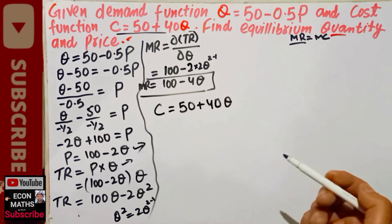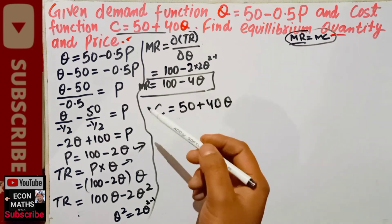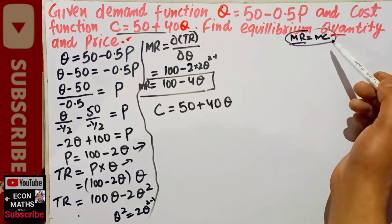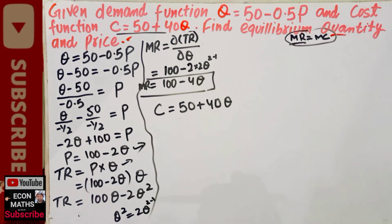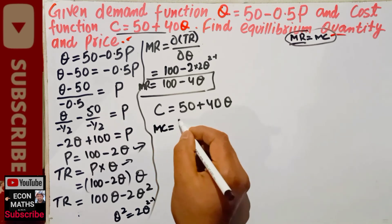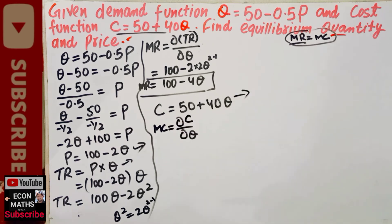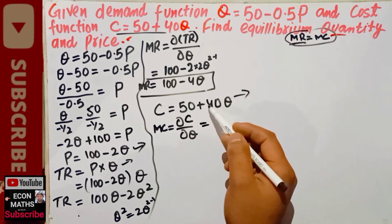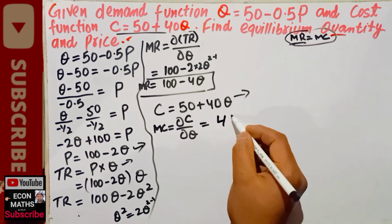We know that equilibrium occurs where marginal revenue equals marginal cost. We have found the marginal revenue: 100 minus 4Q. Now we need to find the marginal cost by taking the derivative of the cost function. The derivative of the constant 50 is 0, and the derivative of 40Q is 40. So our marginal cost is MC = 40.